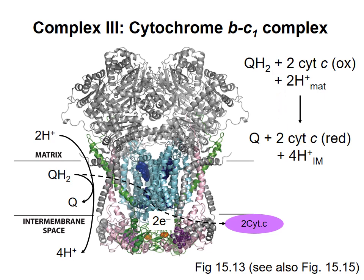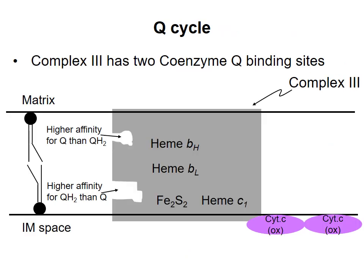This representation is a simplification of what happens, which is a process called the Q cycle. Let's look in a little more detail at what happens at complex 3. Now here I've represented complex 3 with this gray shape. Complex 3 has two binding sites for coenzyme Q. One site near the intermembrane space has a higher affinity for the reduced form of coenzyme Q, and the other site near the matrix has a higher affinity for the oxidized form. Also in complex 3 are three heme groups and an iron-sulfur center.